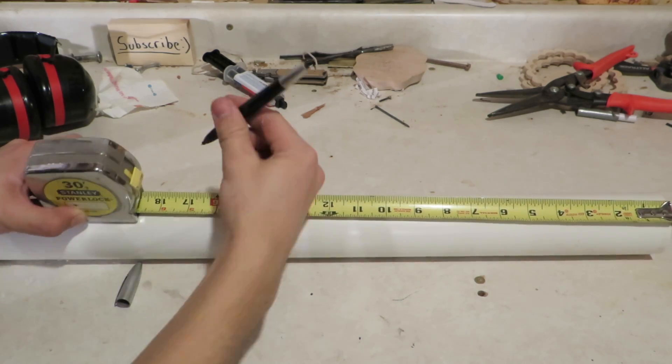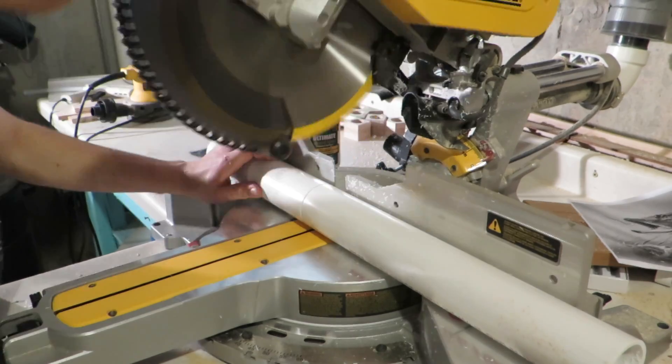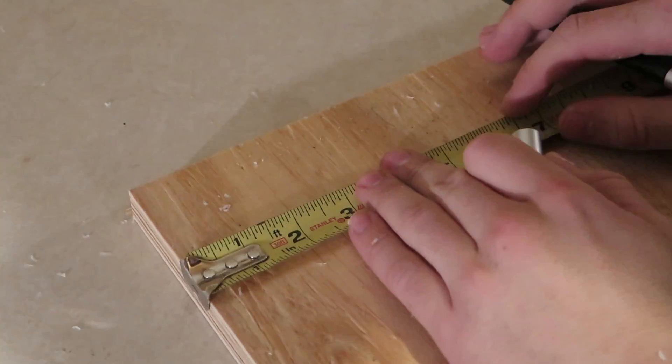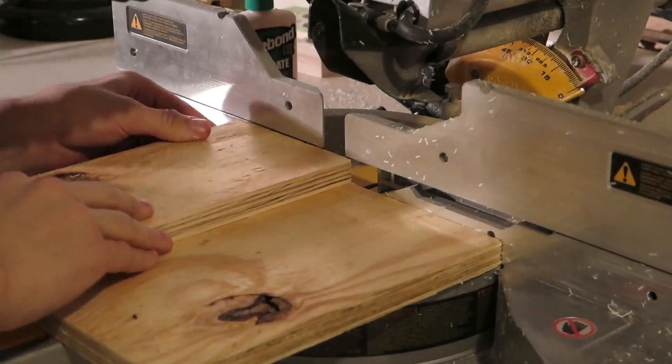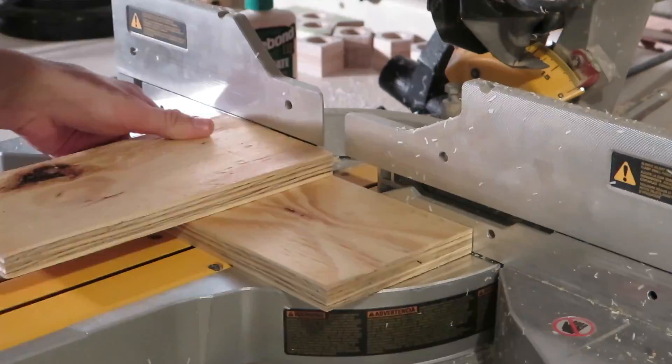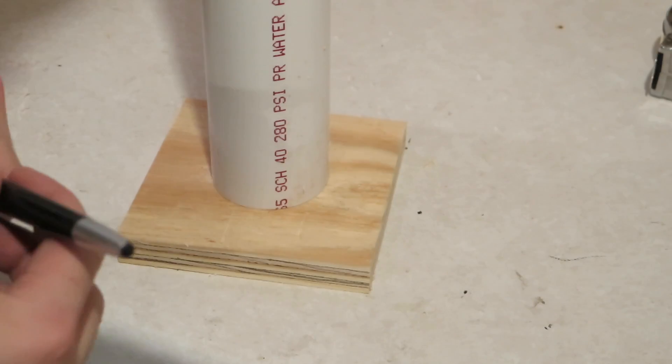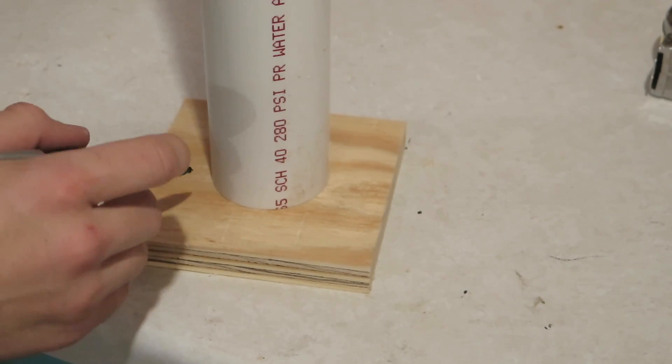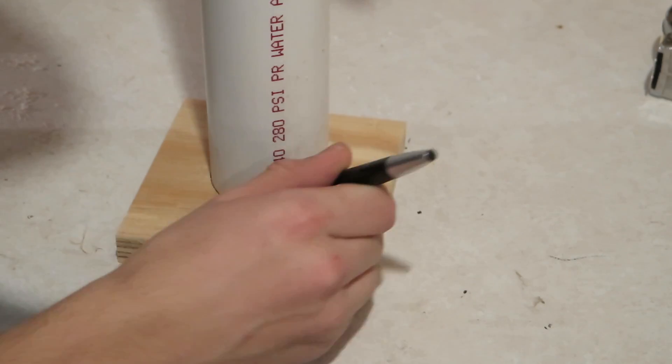Measure out 16 inches and mark the pipe there. Now I'm going to approximate the center and draw a circle around this tube so I can cut out a hole on the scroll saw.